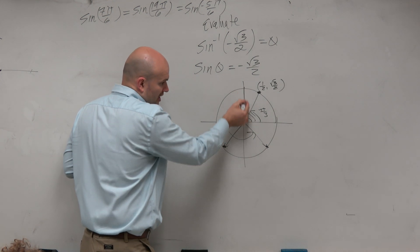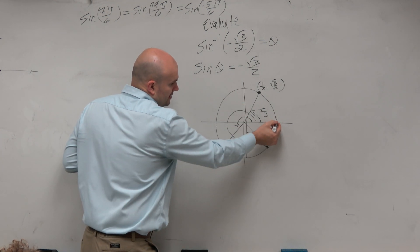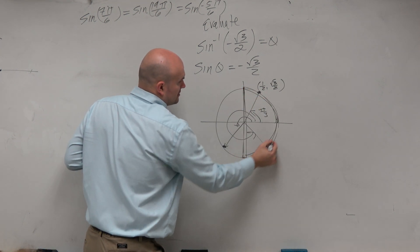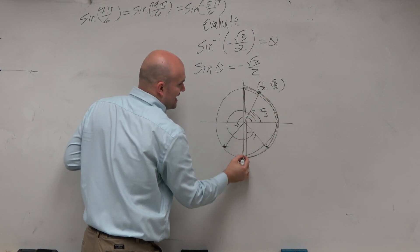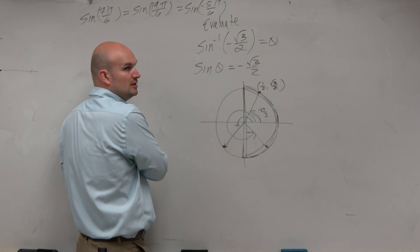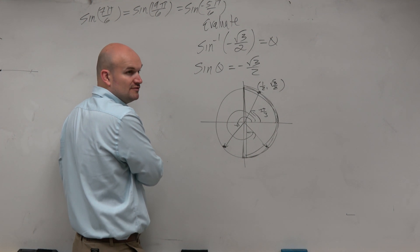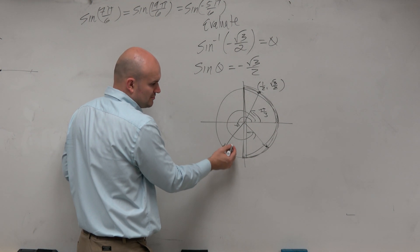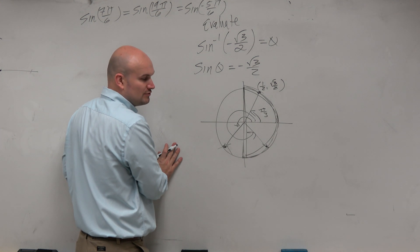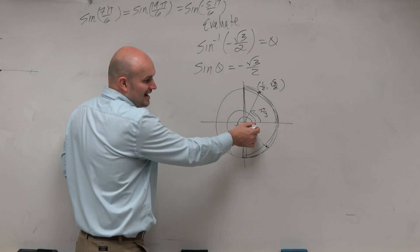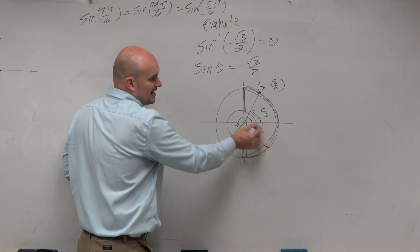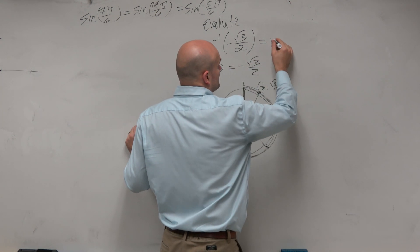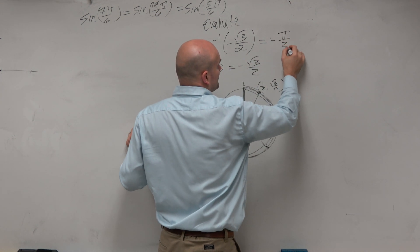Those are outside of the restriction of negative pi halves to pi halves. The angle has to remain within the first and fourth quadrant. Obviously this one doesn't work — I can't get to it while remaining in the constraint. But I can do this angle just by using the negative version. So my answer is negative pi over 3.